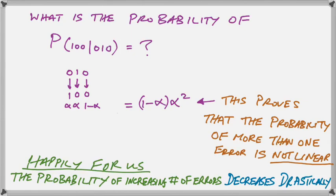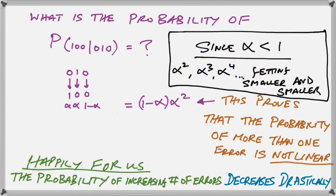So this proves that the probability of getting more than 1 error is less. So the more errors we have, the less likely it becomes. Happily for us, the increasing number of errors is going to get drastically decreased. It's not a linear quantity and you can see this because if you add more digits for more errors, you will move to alpha cubed and alpha to the fourth power. So that is definitely not decreasing linearly.